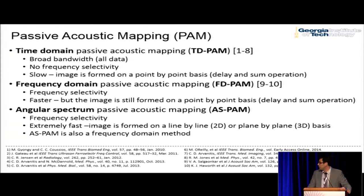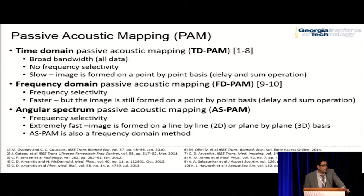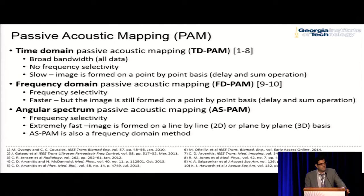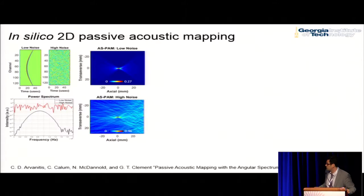We propose the use of the angular spectrum method. For those more familiar with MRI imaging, this is a k-space method to reconstruct the images. This technique provides frequency selectivity and is extremely fast because images are now built on a plane-by-plane basis in three dimensions.